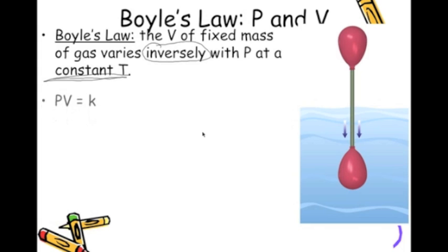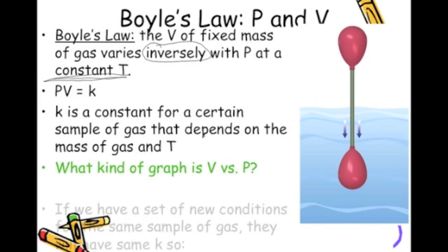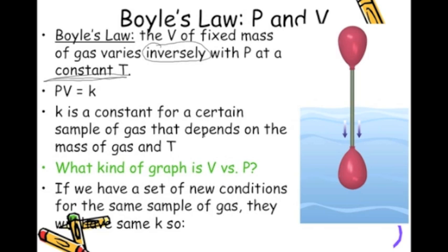Now, it creates a constant that we have for certain samples of gas that depend on the mass of the gas and the temperature. And what this does is it creates a graph for us. And we can see that on that graph and with that slope, we can set it to new conditions, meaning we can change either the pressure or the volume, and we can solve for the other. And we get this equation, which this is Boyle's Law equation,